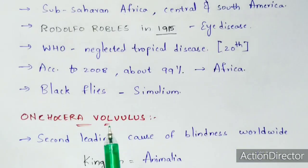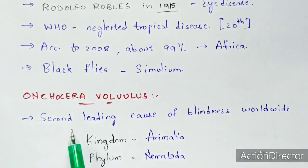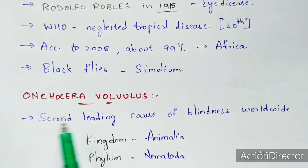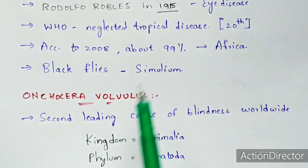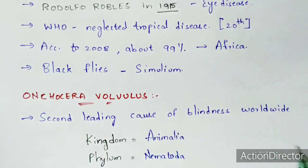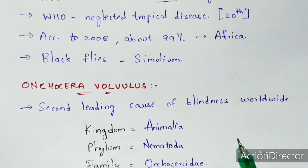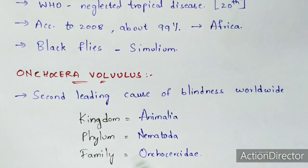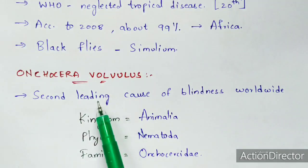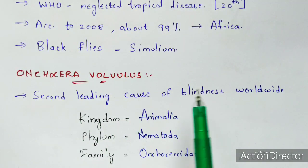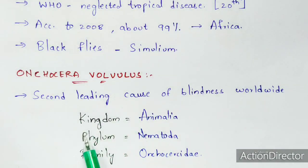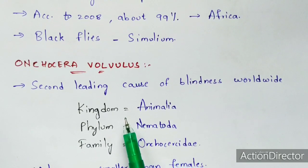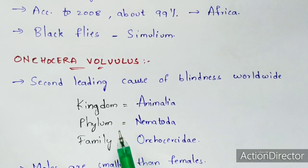Onchocerca volvulus is the second leading cause of blindness worldwide. It belongs to the kingdom Animalia, phylum Nematoda, and the family Onchocercidae.